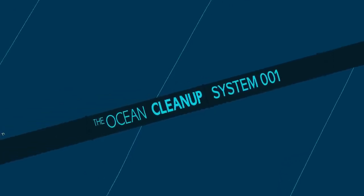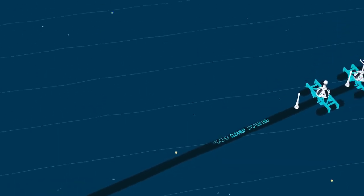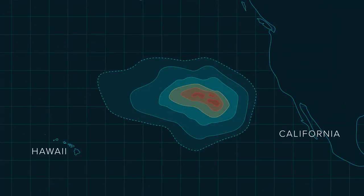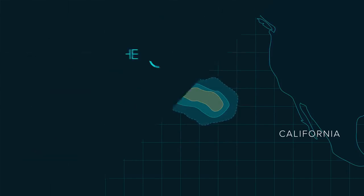This is the first of a fleet of 60 systems. Once deployed, the fleet is expected to clean up 50% of the Great Pacific Garbage Patch every 5 years.